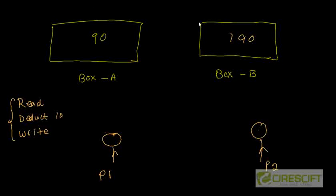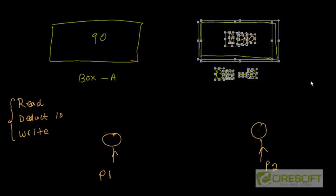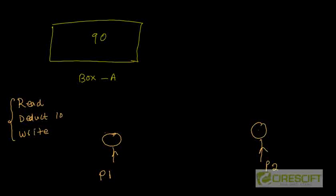Now, let's remove box B. We just have only box A. Let's say to start with, we have 100 here. Now I am asking P1 and P2 to do the same operation - read, deduct, write. That means P1 goes to box A and P2 also goes to box A, the same box.